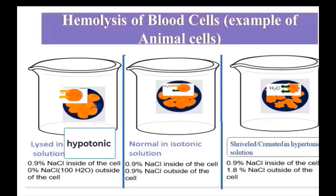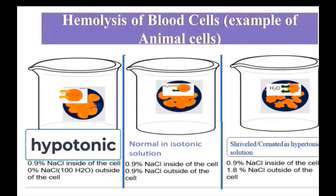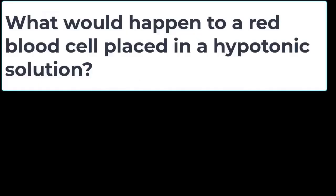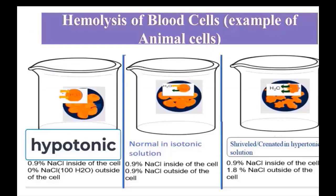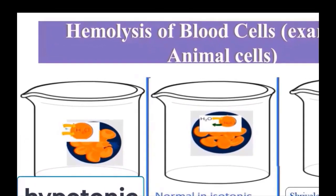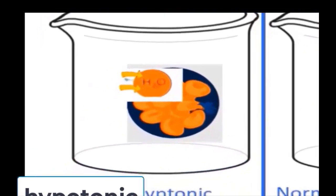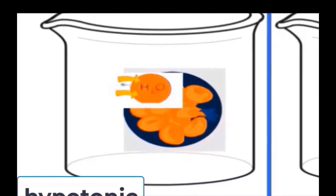Now I want to talk about osmosis in animal cells, such as red blood cells. If you place a red blood cell in a hypotonic solution — a solution that has less solute — the net flow of water will be into the cell. So the cell will swell first and then it will burst, or lyse.